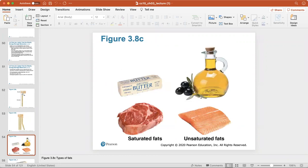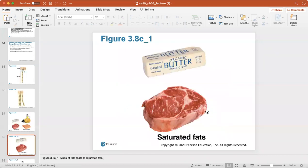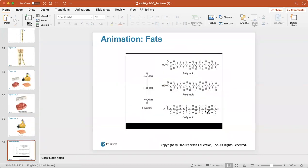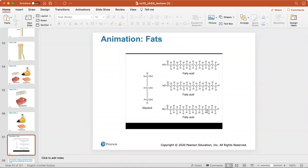Here are types of fats. Saturated fats are found in red meat, butter. Unsaturated fats, sometimes known as the healthier fats, olive oil, and fish oil.